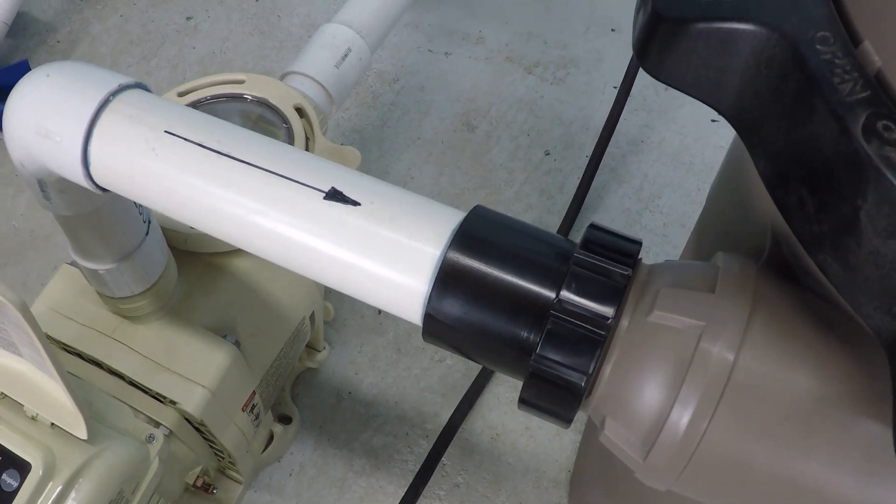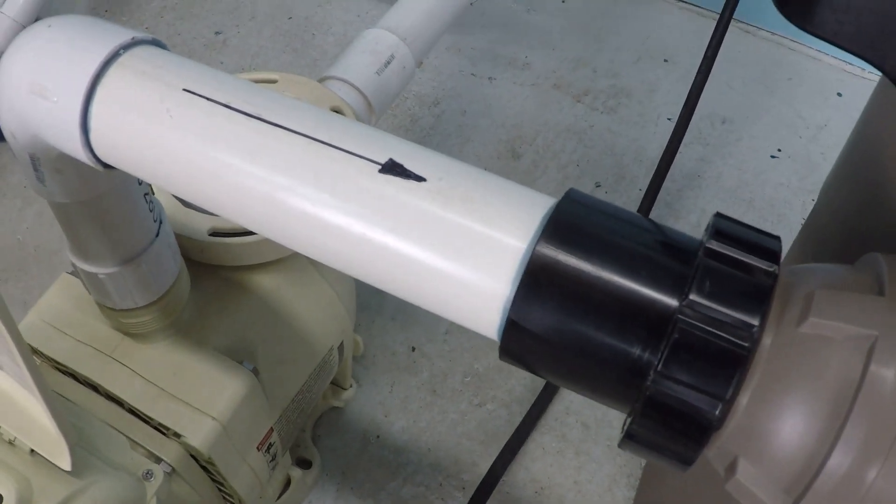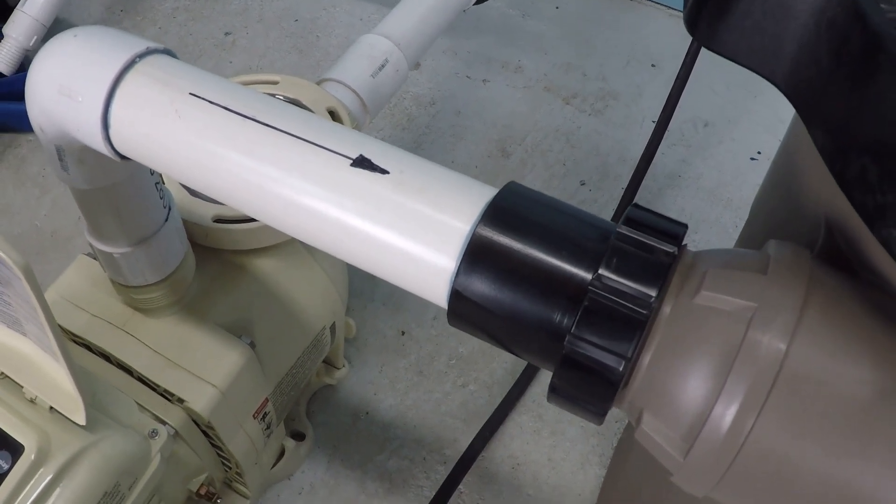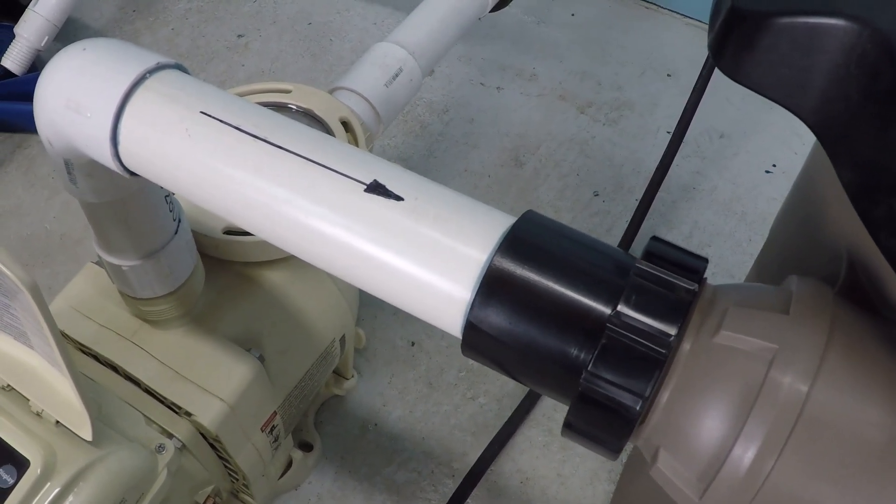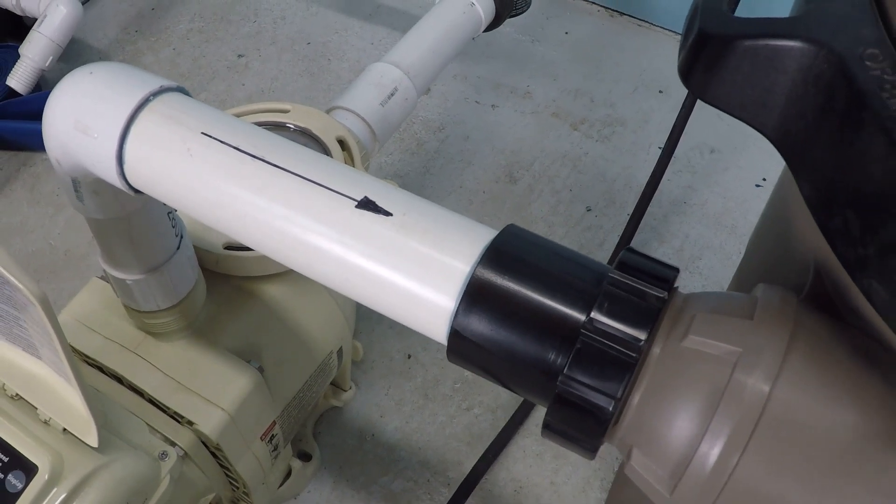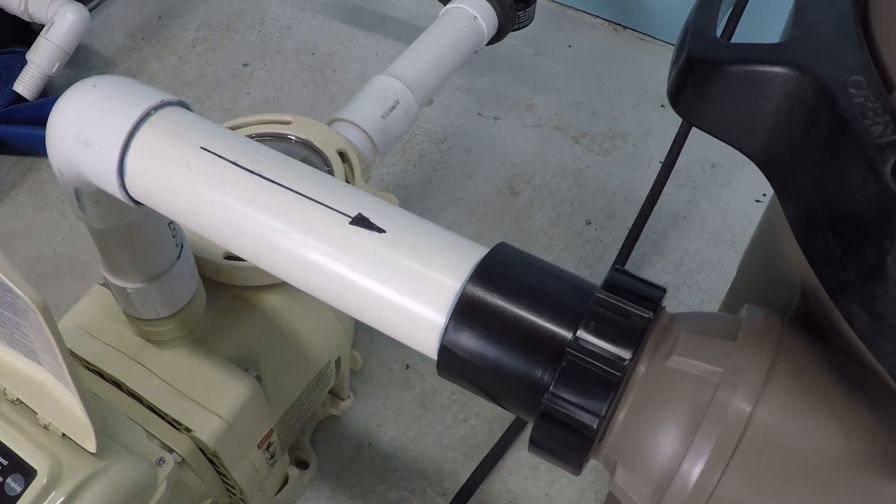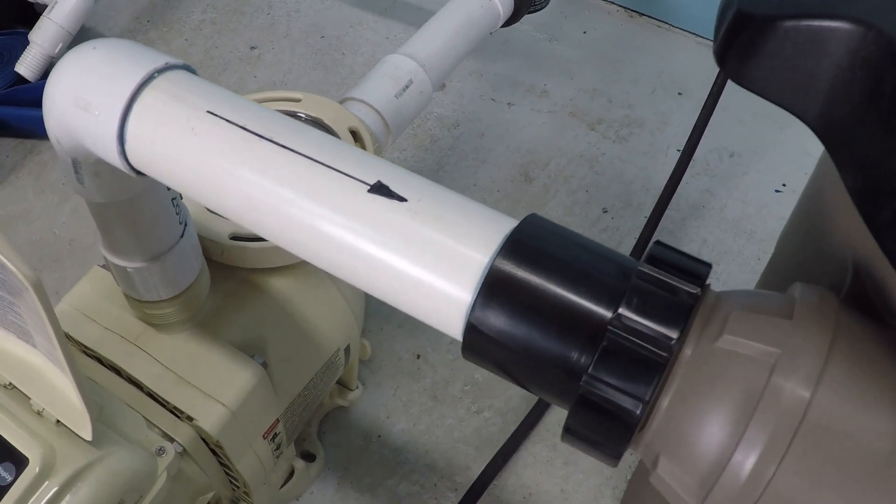Are black pool valves ABS? With most pipe, you'd be right to assume that it's ABS, but when you're talking about swimming pool systems, you're talking about pressure-rated systems, and ABS is not pressure rated.